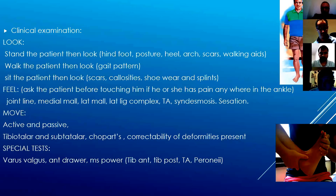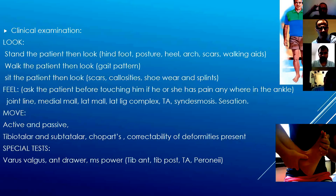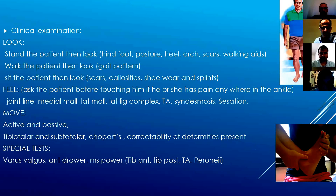For movement, you must do both active and passive — you can't just do passive. Ask if the patient has any pain while you're doing movements. Movements to assess include the tibiotalar joint, subtalar joint, Chopart's joints, and whether any deformity is correctable. Special tests include varus and valgus stress tests for the lateral ligament complex and deltoid ligament to ensure they are intact, as that will guide treatment. Also do the anterior drawer test, and assess muscle power including tibialis anterior, tibialis posterior, and the peroneals.